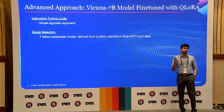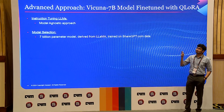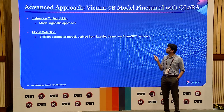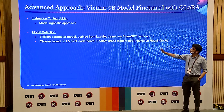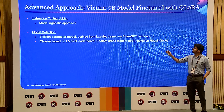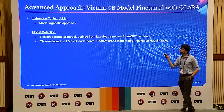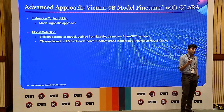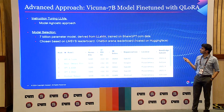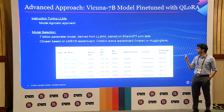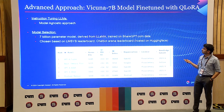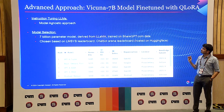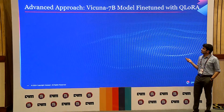Next, why did we choose this model? This is the Vicuna 7B model — it was fine-tuned on the LLaMA 2 7B model using data from ShareGPT.com. It was chosen on the basis of the LMSYS leaderboard, which is curated on Hugging Face by people at CMU and UCSD. They very regularly benchmark all open-source and proprietary models in the LLM space — it's a good place to look for new models. At the time of doing this experiment, Vicuna was one of the better 7B parameter models, which is why we chose it.